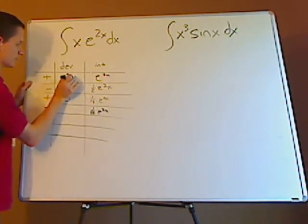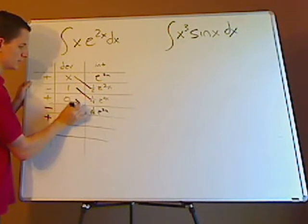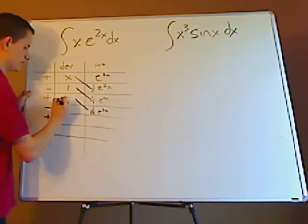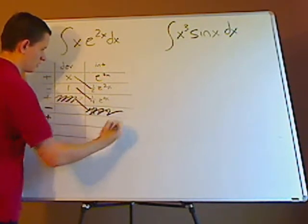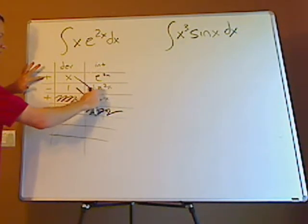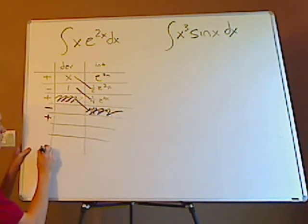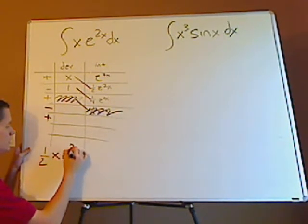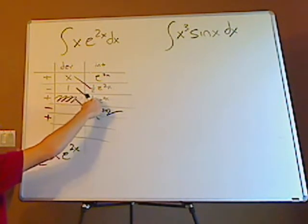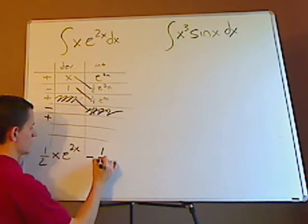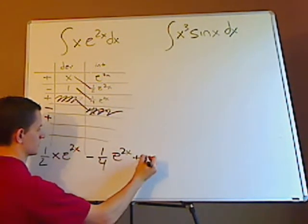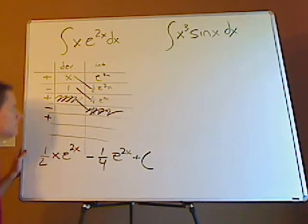And then just do the diagonals. Now once you get to zero like that, you can stop. You don't need to go on, because that's not going to be there. So then you have, and it's the plus sign because that's what's here. So it's plus x times this, so it would be one half x e to the 2x. And then it's minus one times this, so it's a minus one fourth e to the 2x. And then plus c, because it's an indefinite integral.